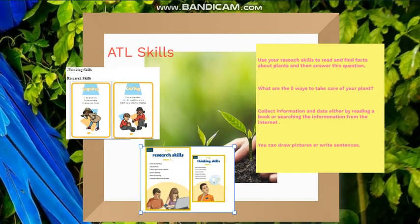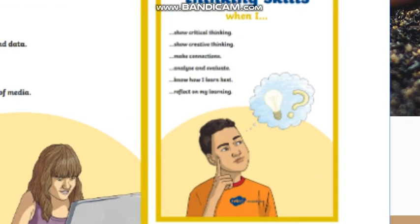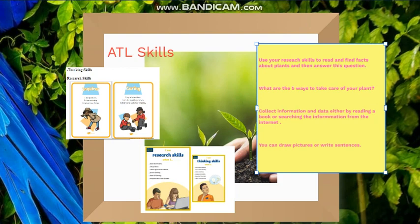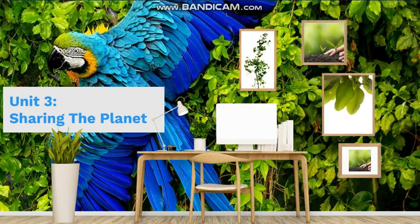Mainly, we are going to focus on thinking skills and research skills throughout this unit so we can understand everything explained in it. We are going to use our research skills to read and find facts about plants and then answer the question: What are the five ways to take care of your planet? We can look for information in a book, on the internet, or ask someone how we can take care of plants. We will also draw pictures or write sentences to show the ways to take care of plants and gather data through many ways — reading books, finding information on a website, or asking an adult. This is an introduction for our Unit 3 theme, and it's going to be a very interesting and fun one. Thank you for listening.